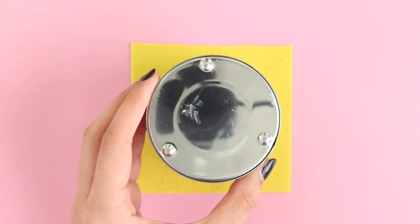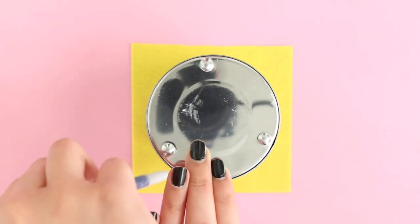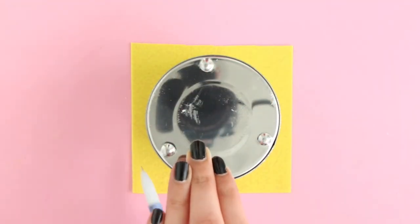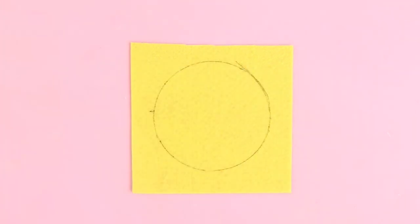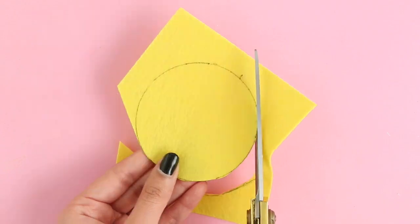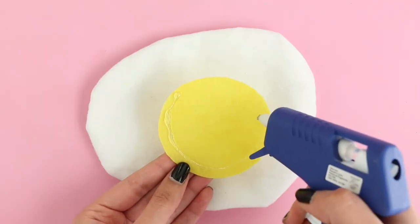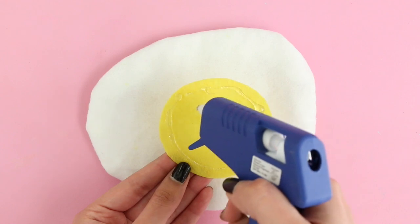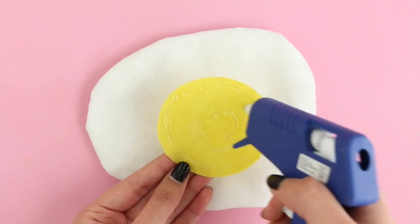Using some yellow felt, I'm going to make the egg yolk. So I took this candle holder and I drew a circle. Then I'm going in with my pair of scissors and I'm going to cut that out. Now you can use a hot glue gun and just stick the egg yolk on top.